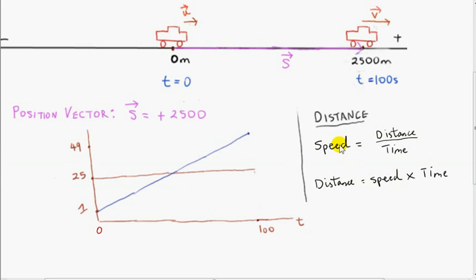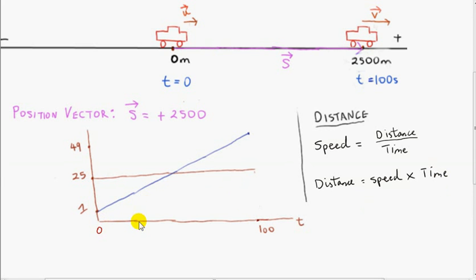It's easy to see why that is so by considering the formula speed equals distance over time. More correctly, this should be called the average speed. But since we are dealing with a constant speed of 25 meters per second, the average speed is that constant speed of 25. That's the distance travelled divided by the time taken. We just rearrange this to get distance equals speed multiplied by time. So when we got the area under that red line, we multiplied the speed by the time taken.